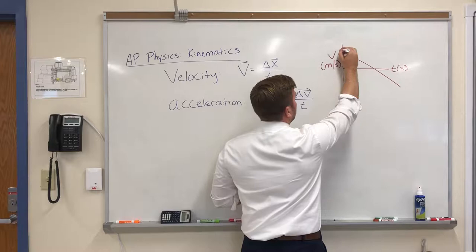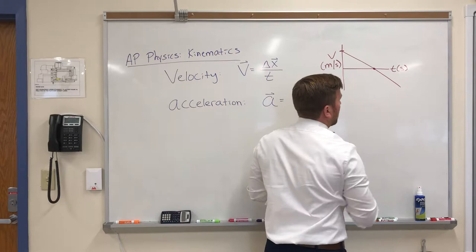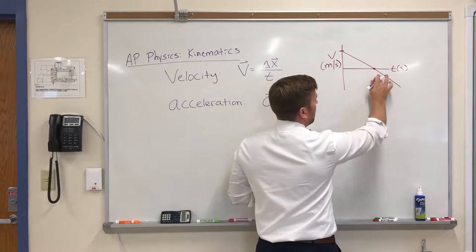What this is telling me is that I started at a positive velocity. I slowed down. When I hit here, I stopped moving. And then I continued traveling in a negative direction and speeding up in that negative direction.